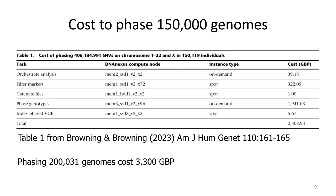Most of the work runs on spot instances, which can be interrupted if capacity is needed by other users. We use DNAnexus normal priority, so if a spot instance fails it automatically reruns on an on-demand instance. In a worst-case scenario, if all spot jobs failed during marker filtering, that cost could increase by a factor of five. But we did not experience that — our cost was about £300 for marker filtering.